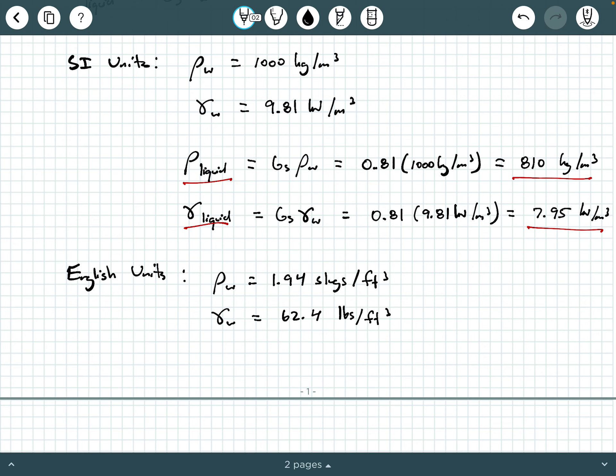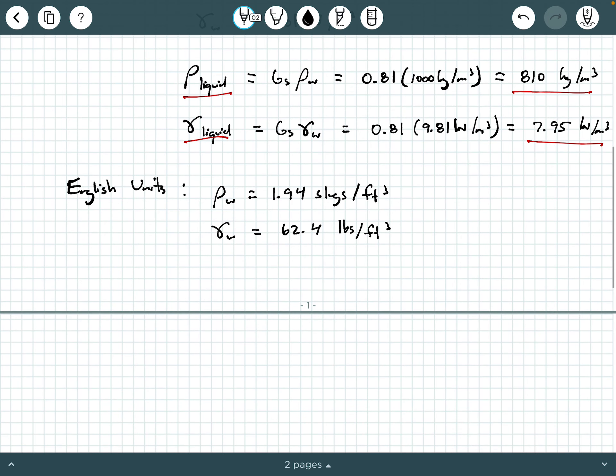So let's compute the same kind of calculation. We're going to say rho liquid is g sub s rho water, but now we're in English units. So we still have 0.81 times 1.94 slugs per cubic foot, and we get 1.57 slugs per cubic foot for our density of the liquid in English units.